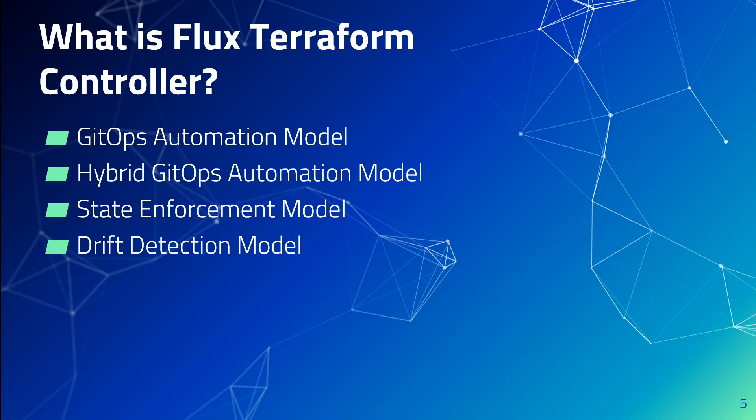Flux Terraform controller also enables you to GitOps your Terraform resources from the provision step to the enforcement step — for example, you can apply the whole EKS cluster. This is called the GitOps automation model. You can also do a hybrid automation model with GitOps. For instance, if you have an existing EKS cluster, you can choose to GitOps only its node groups or its security groups — you don't have to do the whole cluster.